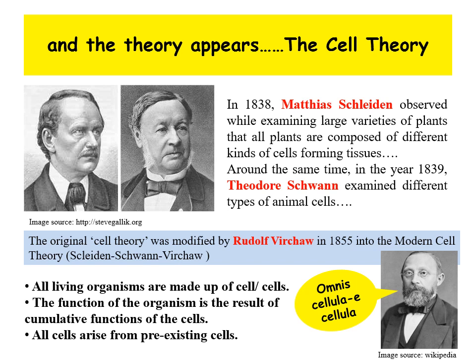Schleiden, while examining vast varieties of plants, observed that they are composed of a wide range of cells giving rise to tissues. Almost at the same time, Schwann, a zoologist, observed similar facts in animals, discussed the cell membrane, and showed the unique presence of cell wall in plants. These two scientists came up with the famous cell theory, which was later modified by Rudolf Virchow in 1855. Thus the modern cell theory is credited to Schleiden, Schwann, and Rudolf Virchow.